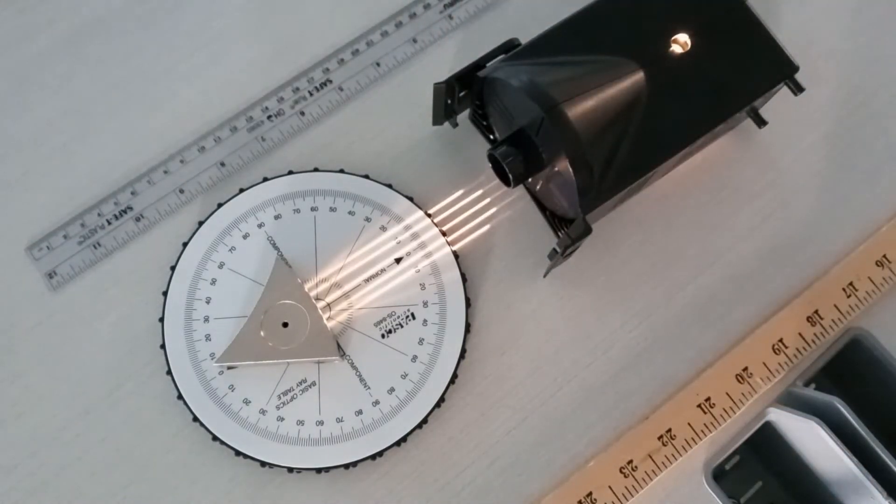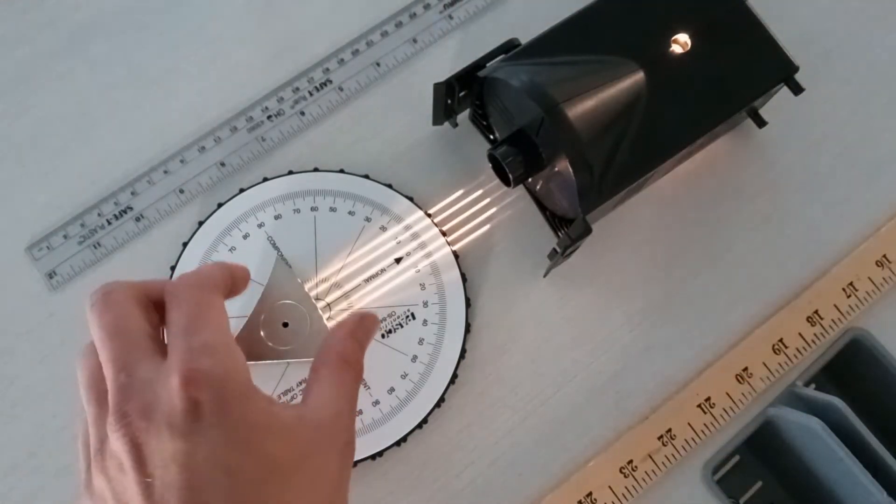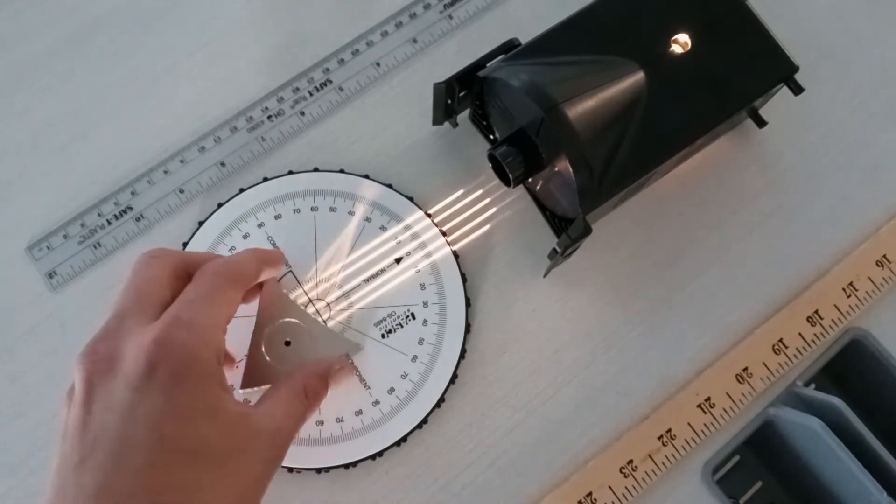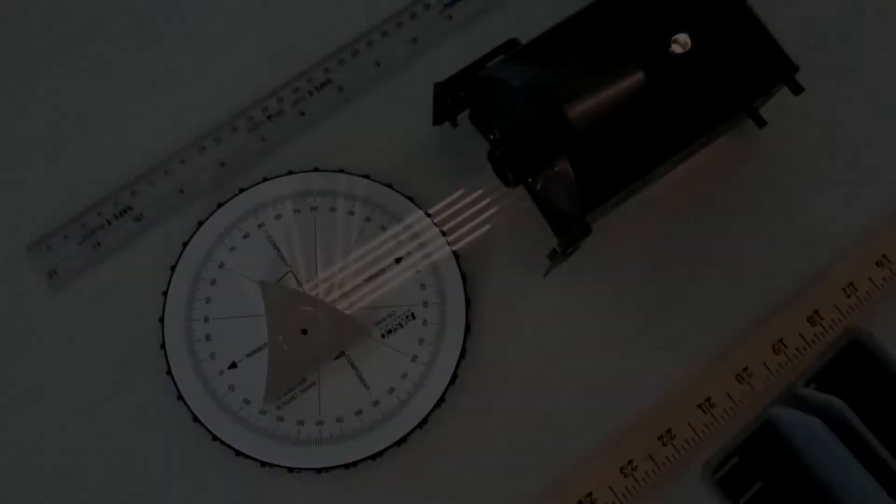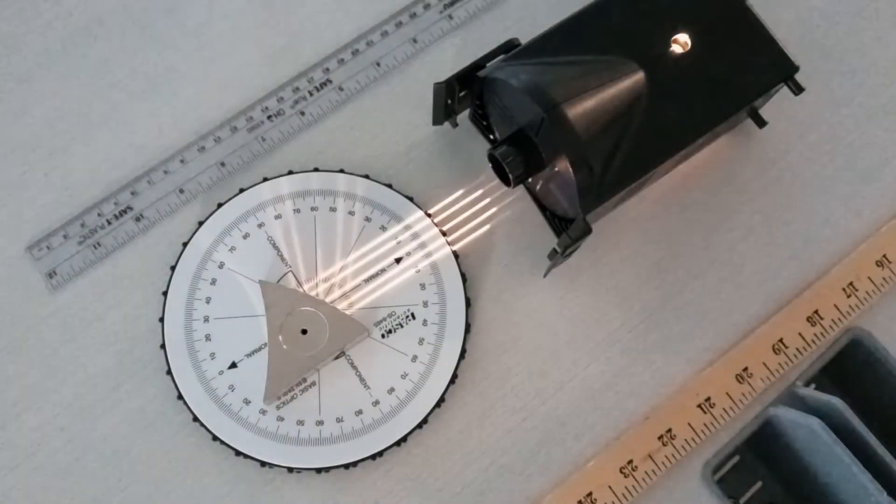We provide a ruler here so that the scale in the video can be easily seen. The convergence of light beams can sometimes be seen more easily if we project the beams off to the side.